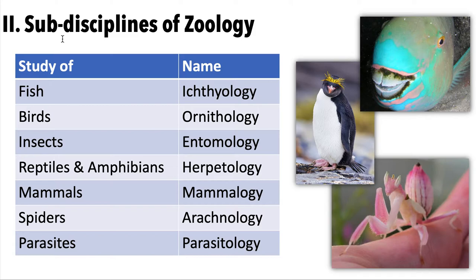If you're majoring in biology in college, these are some class names you might see as options. Fish is ichthyology. Birds is ornithology. Insects is entomology. Reptiles and amphibians are grouped together under herpetology. Mammals is mammology. Spiders is arachnology. And parasites is parasitology. Again, this isn't even all of them — there are plenty more out there.